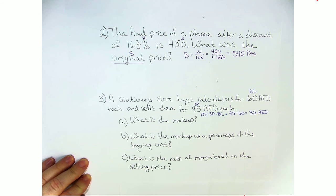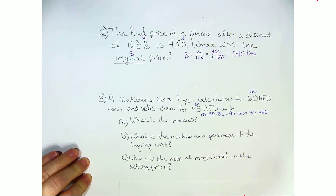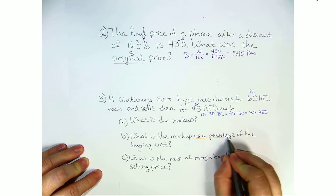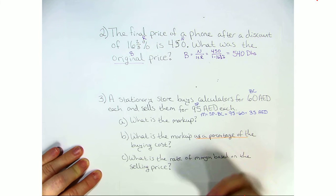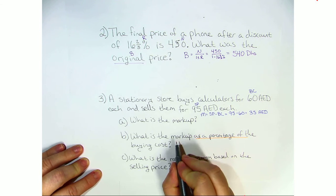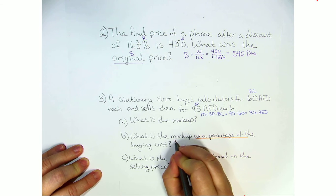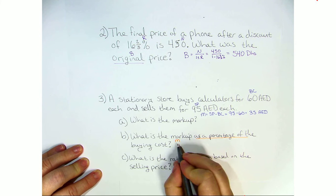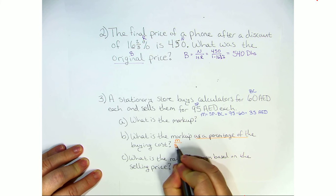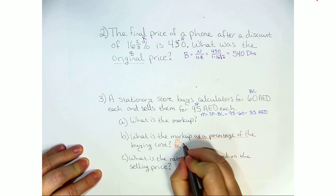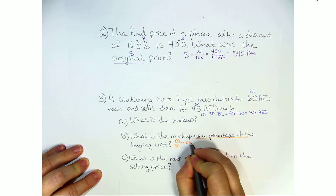Next, B. What is the markup as a percentage of the buying cost? Now, whenever you see as a percentage, that means you're going to be making a fraction because we're looking for a rate. Whatever comes first goes on top and whatever comes second goes on bottom. So M over BC times 100.